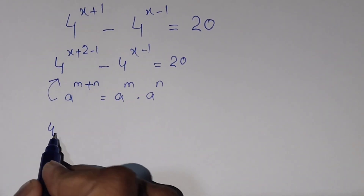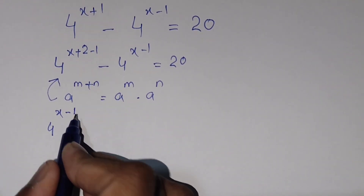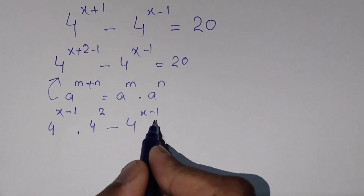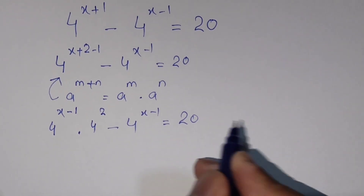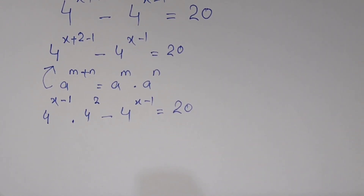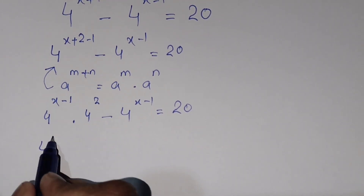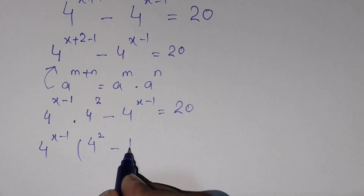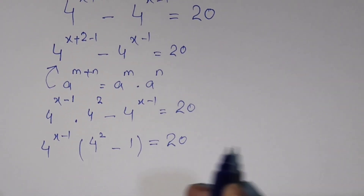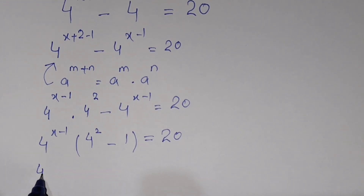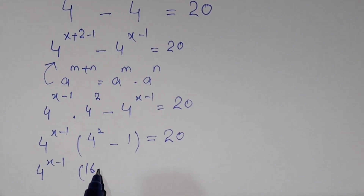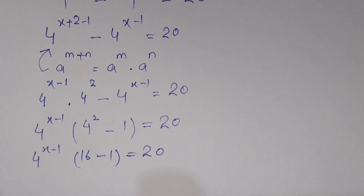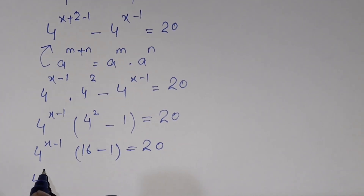So we get 4^(x-1) times 4^2 minus 4^(x-1) as it is equals 20. Now we will take 4^(x-1) as a common factor, leaving us with 4^(x-1) times (4 squared minus 1) equals 20, which is 4^(x-1) times (16 minus 1) equals 20.